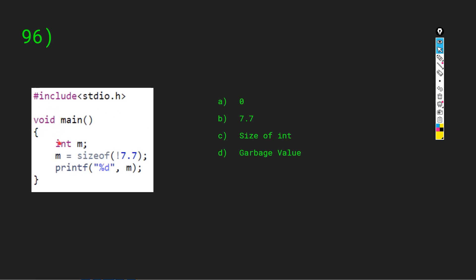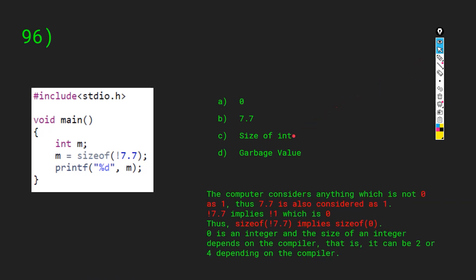We have int m equals sizeof(!7.7), then printf %d m. The computer considers anything non-zero as 1. So 7.7 is considered 1, and applying NOT to it gives 0. Zero is an integer, so sizeof(0) returns the size of int depending on the compiler. The output will print the size of an integer, so the answer is C.